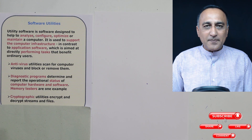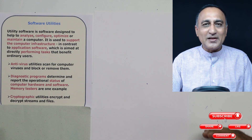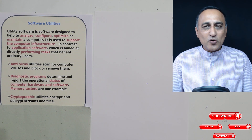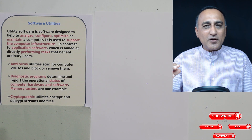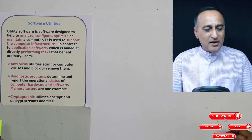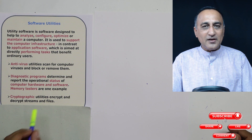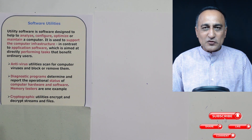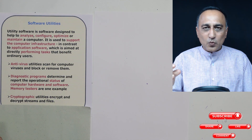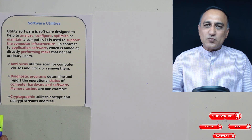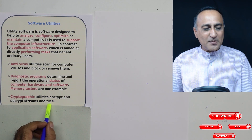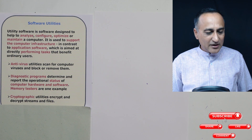Suppose you're working in the military and you need to send secret information from one location to another. You will not simply type it and send it as text because somebody on the way can see it. So what you do is you code it into a different format — for example, A may be X, D may be Y. This is known as cryptography. There are certain utilities where you can encrypt, meaning you can transform the words into different things, and then at the other end, there is software to unlock it. So you can think of it as locking from one side and unlocking from the other. This is an example of a cryptographic utility.